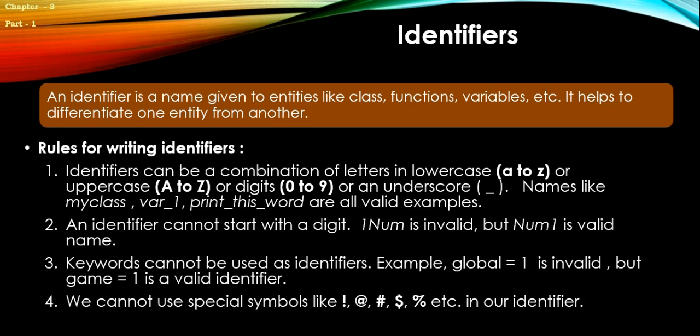Rule number four: We cannot use special symbols like exclamation mark, at the rate, comma, dot, hash, dollar, percent, etc. in naming identifiers. As I told you, except underscore, no other symbols are used. Next, identifiers can be of any length. There is no limit to the length.